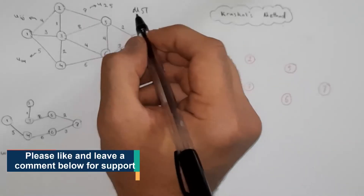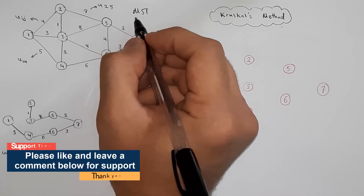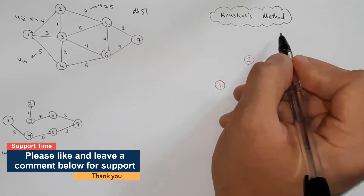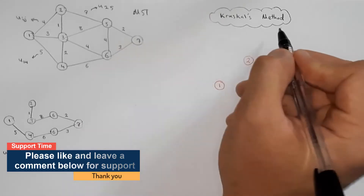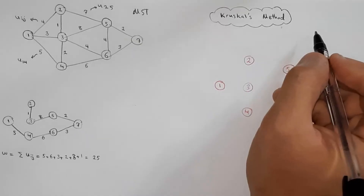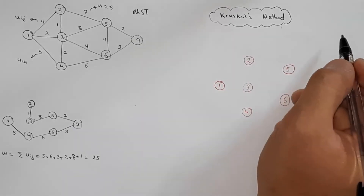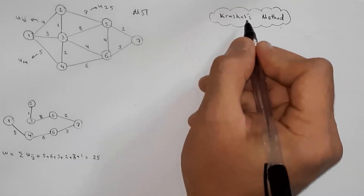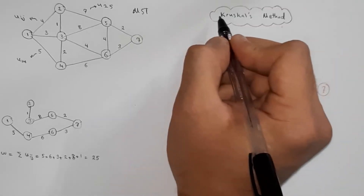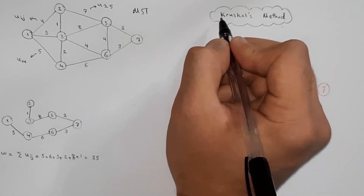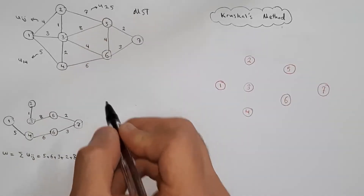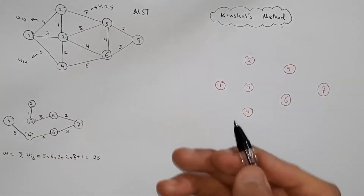So in order to calculate the MST with an algorithm, we will talk about Kruskal's method — Kruskal's algorithm. Remember there are other algorithms such as Prim's algorithm, but we want to talk about Kruskal's method because it is a very simple method for calculating the MST, I mean minimum spanning tree. So what is the algorithm?